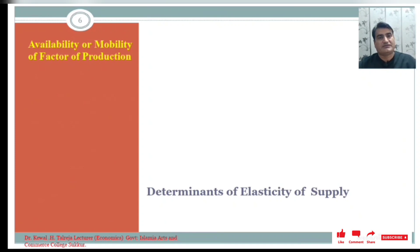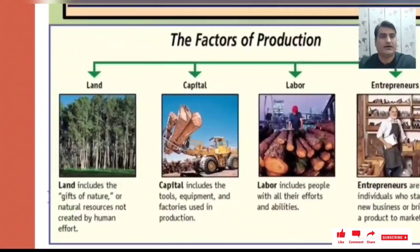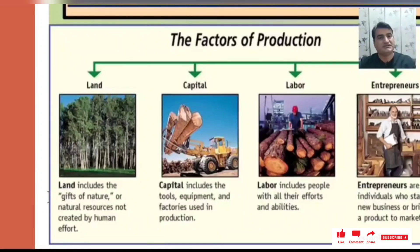Another factor is the availability or mobility of factors of production. There are four major factors of production: land, labor, capital, and organization or entrepreneurs. Land includes the gifts of nature or natural resources not created by human efforts. Capital includes tools, equipment, and factories used in production. Labor means mental or physical exertion undertaken for monetary consideration. Entrepreneurs are individuals who start a new business or bring a product to market.